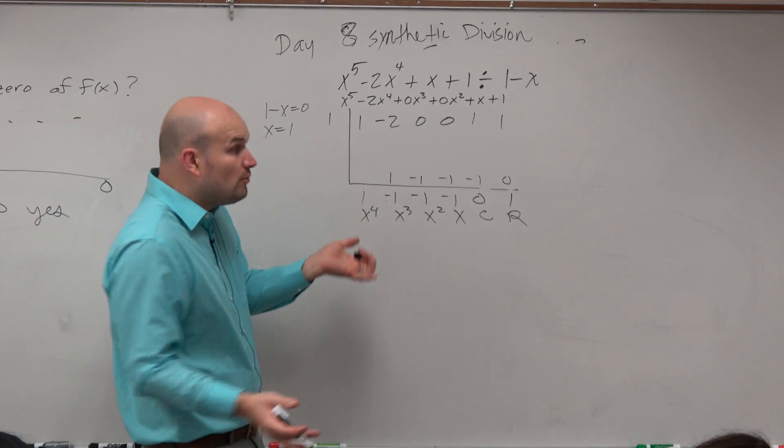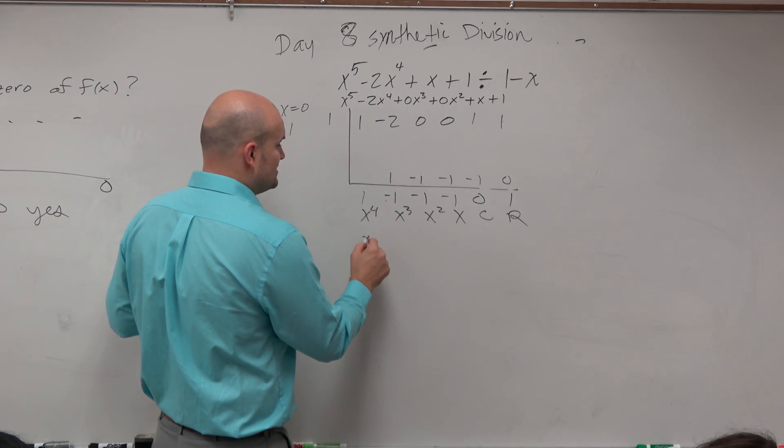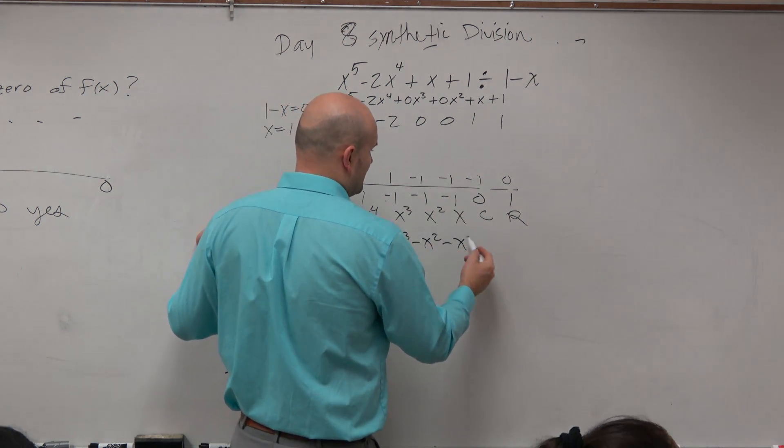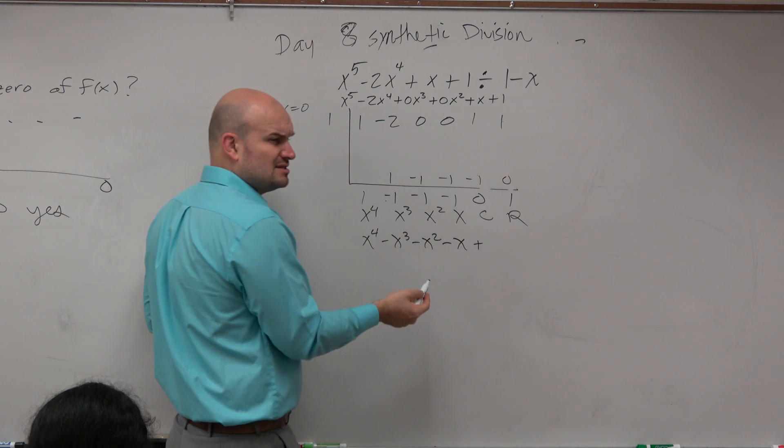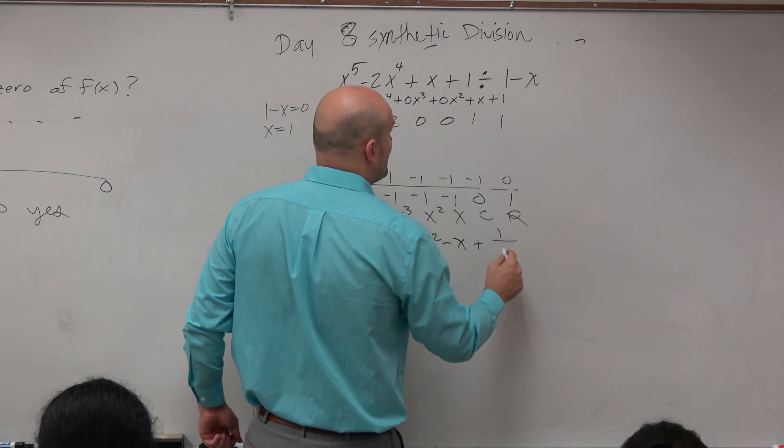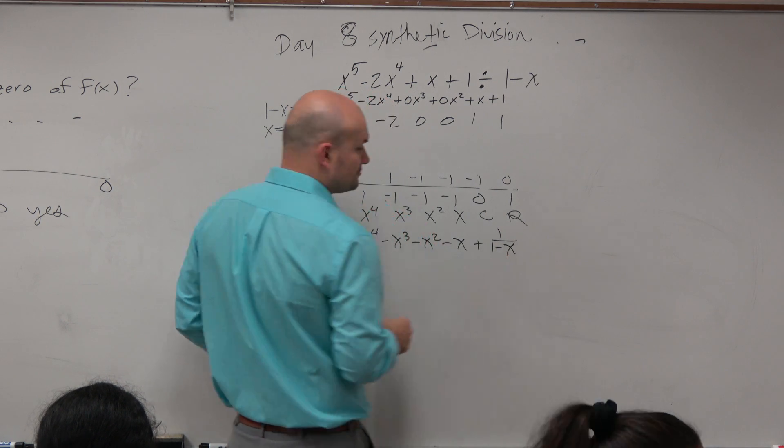All right? So if we wanted to write the quotient, we would say this is x to the fourth minus x cubed minus x and then plus, I forgot to do this, oh, we didn't have remainder. Remember, just like long division, we can take the remainder and then put it over our divisor.